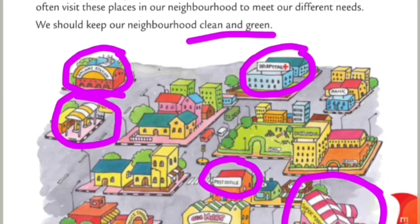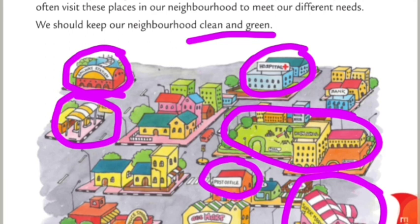Next hai high school. School kaisa hota hai, woh to aapko pata hai. School mein bahut saare rooms hote hai — classrooms, office, principal ka alag room, library, laboratory, washrooms. Aur yeh hai ABC mart, jo DMart jaisa hota hai.